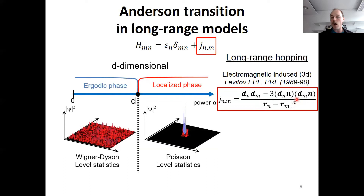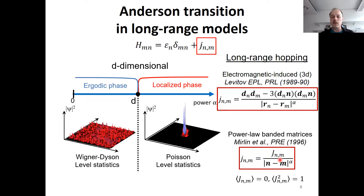So now we have the parameter alpha which we can tune. As we tune alpha we undergo the transition — not as a function of disorder amplitude but of alpha. If alpha goes to infinity, we return to a short-range model, which gives localization for dimensionality d ≤ 2. If alpha goes to 0, we approach something very similar to the Gaussian random matrix ensemble — exactly so for the Mirlin model where the numerator is replaced by Gaussian random numbers. So as we change alpha we undergo the transition, which these papers claim occurs at alpha equal to the dimensionality d.